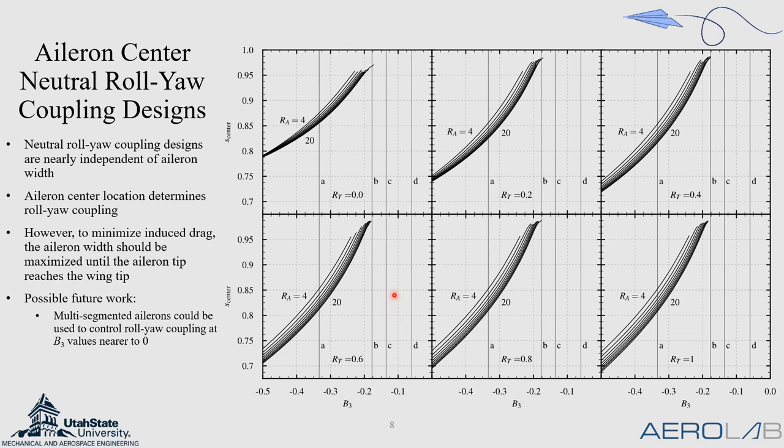You might have noticed that these lines end abruptly. That is because for the given planform and B3 lift distribution, there is not an aileron design, a single segmented aileron design, that can generate neutral roll-yaw coupling. From our analytic development, we know that if we used a multi-segmented aileron, which has more degrees of freedom, we can extend the neutral roll-yaw coupling range to B3 values nearer to zero.